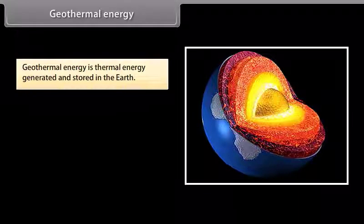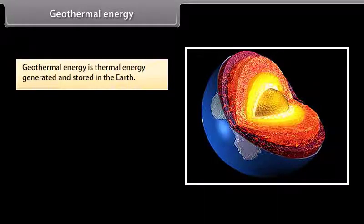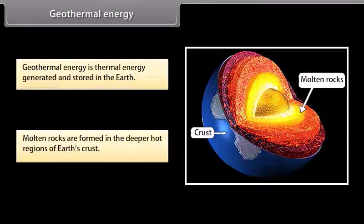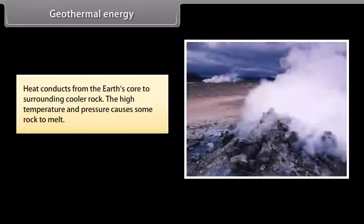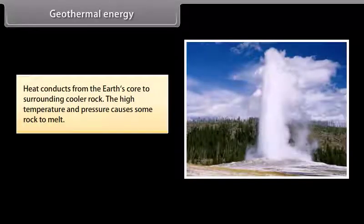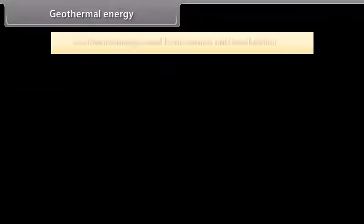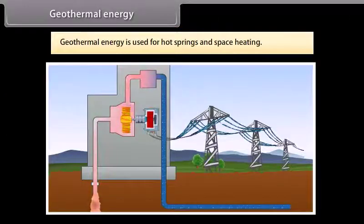Geothermal energy. Geothermal energy is thermal energy generated and stored in the earth. Molten rocks are formed in the deeper hot regions of earth's crust. Heat conducts from the earth's core to the surrounding cooler rock. The high temperature and pressure causes some rock to melt. This heats the rock and water in the crust, sometimes up to 370 degrees Celsius. Geothermal energy is used for hot springs and space heating.